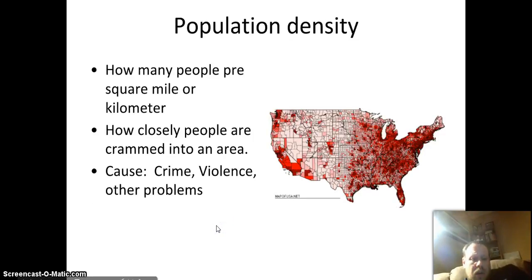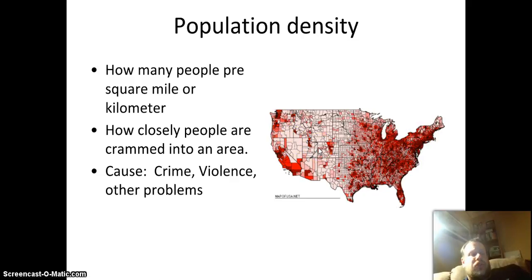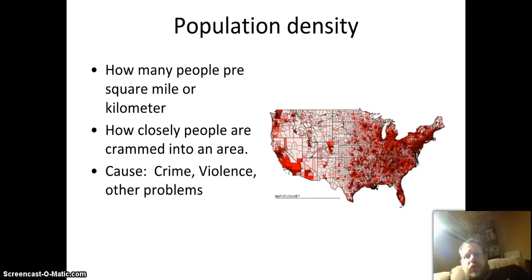We also have the idea of population density — how many people are crammed into a small location. We measure by square mile or square kilometer. On this map, you see some big cities are super crammed in, while other areas are not. The big problem comes down to natural resources — whether it be water, food, or jobs and money. The more people packed into an area, the fewer those resources will be available, leading to crime, violence, disease, and other problems.